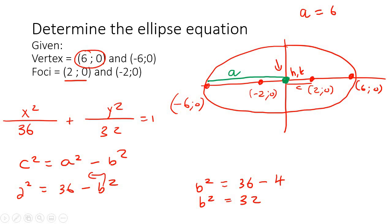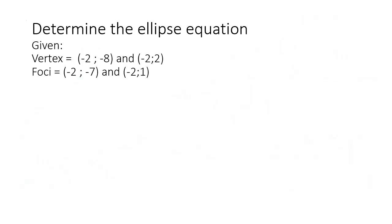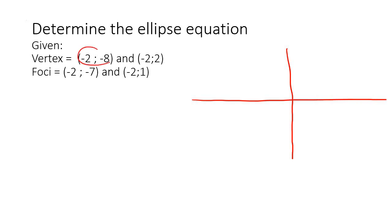It's pretty easy once you know what all the different parts mean — what is a, b, c, h, and k. So let's do some more examples. For the next example, the first thing I'd recommend is to plot the points to determine whether it's horizontal or vertical. We have the point negative 2, negative 8.